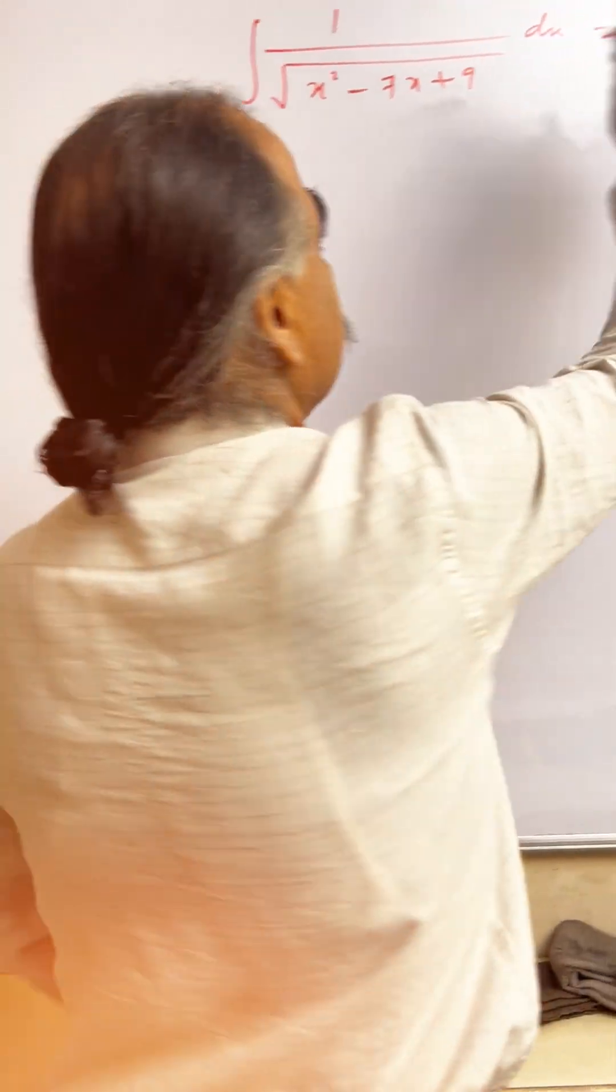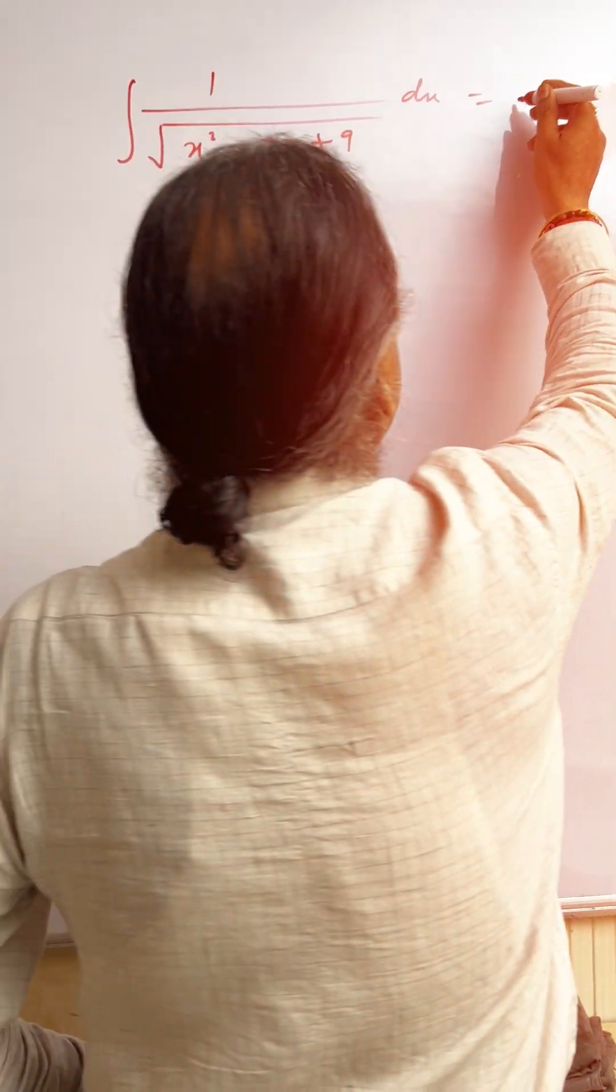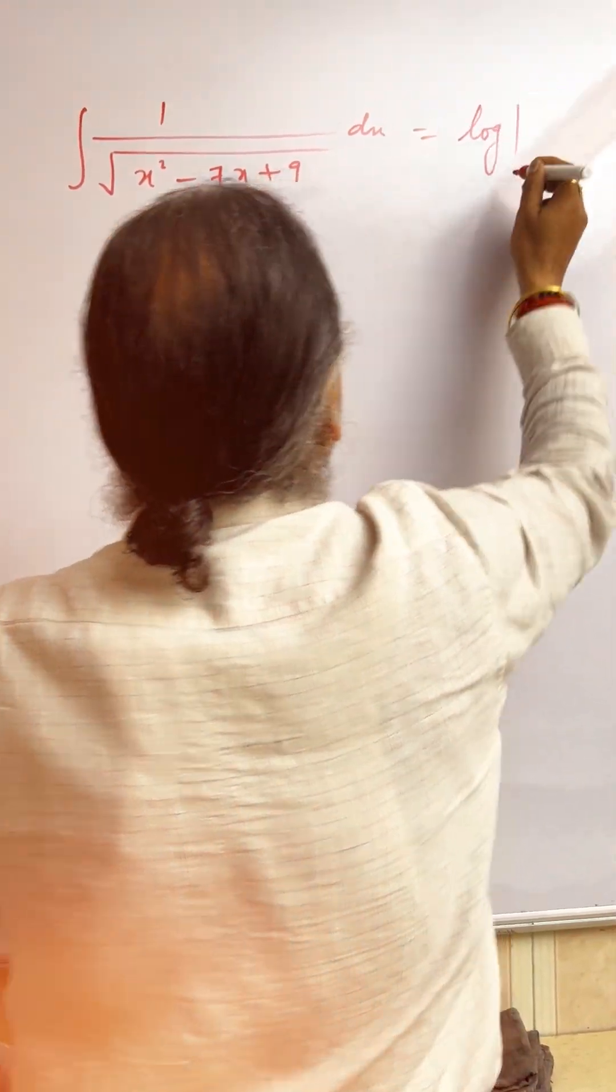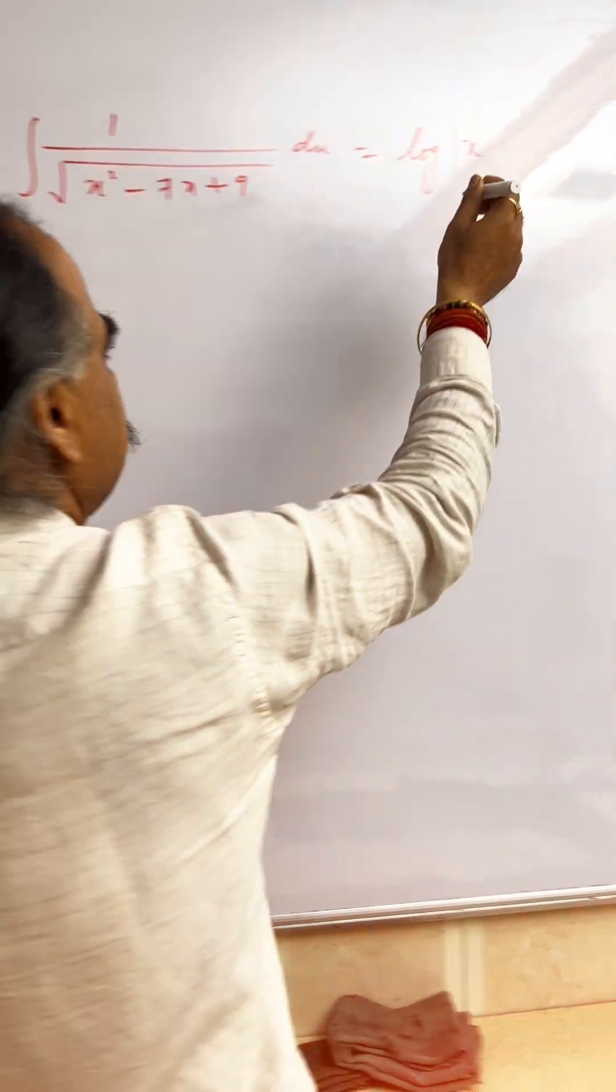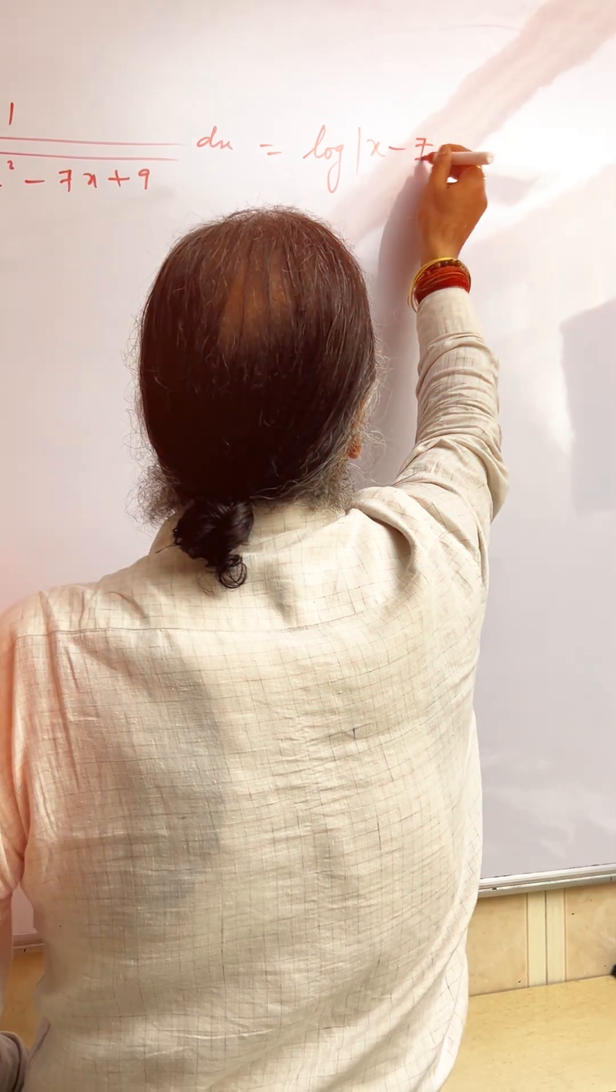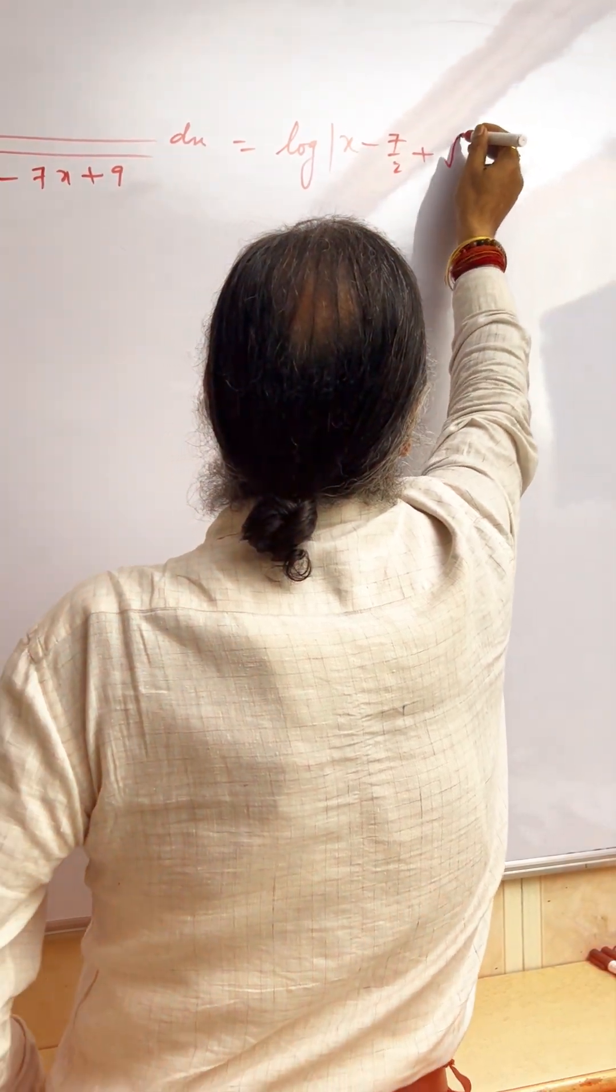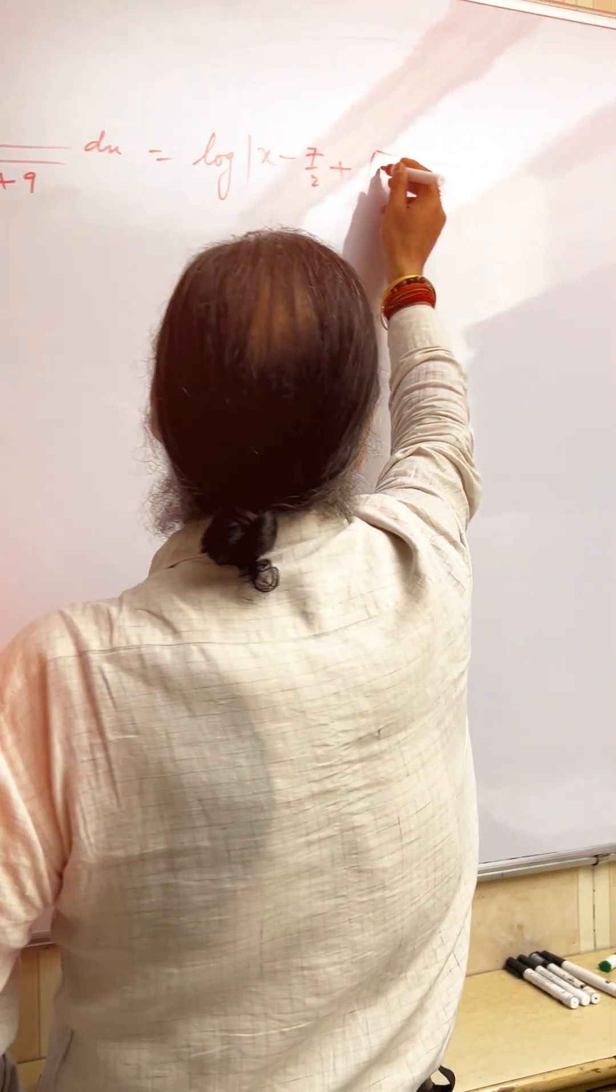How to find the integral of this? This is log. From here we will take x. The middle term is what? 7x. So divide by 2: minus 7 by 2, and keep the entire root as it is, x square minus 7x plus 9.